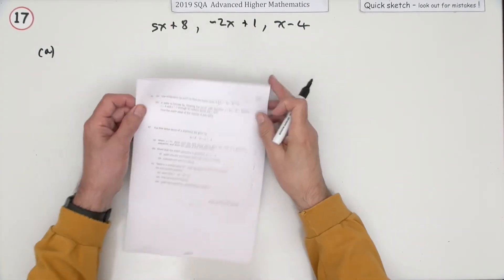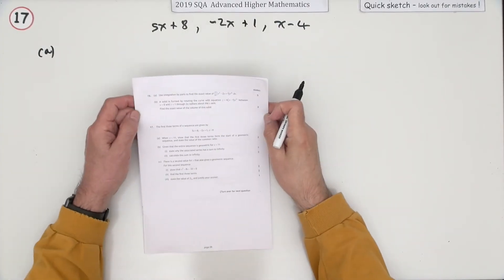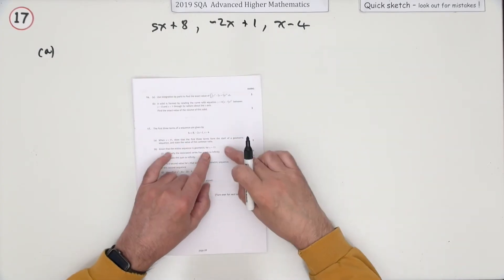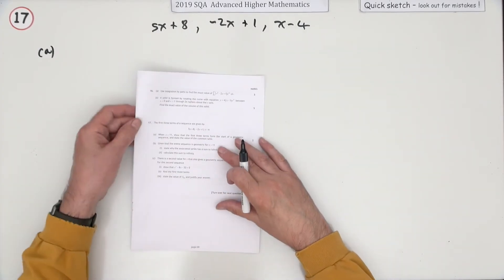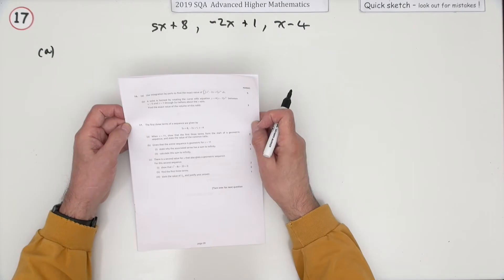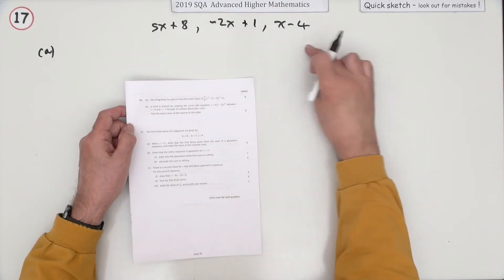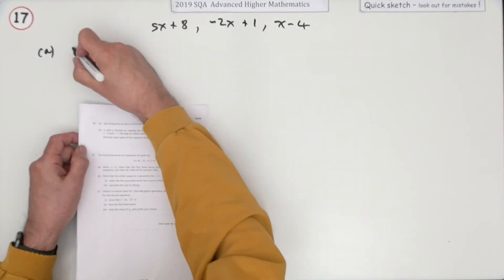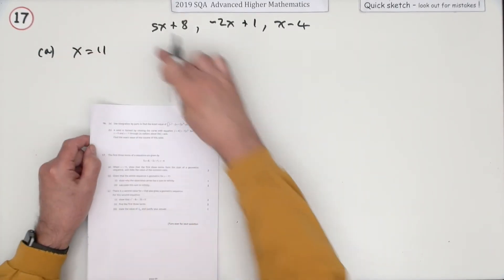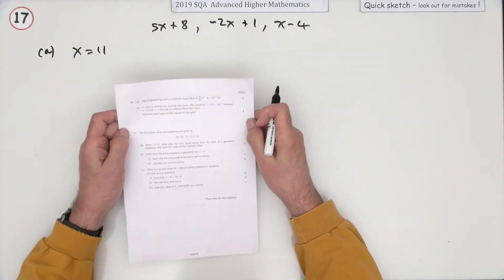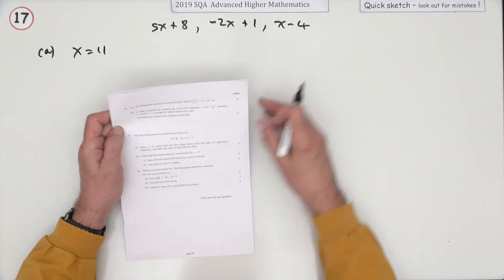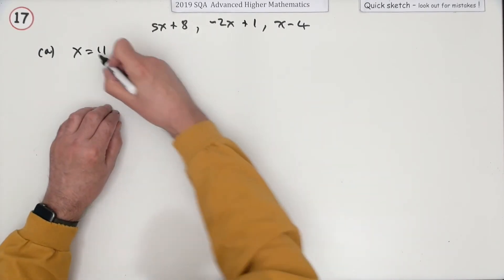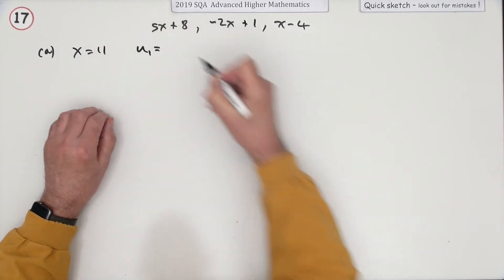This is question 17 from the 2019 Advanced Higher Maths, a 10-mark question on sequences — specifically geometric sequences and series. Here are the first three terms of a sequence. Part A: when x equals 11, show that those three terms could form the start of a geometric sequence and state the value of the common ratio, for two marks.